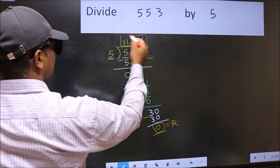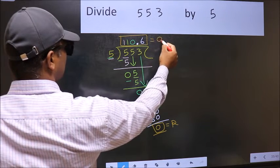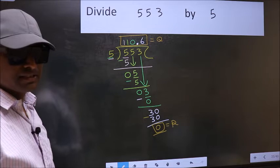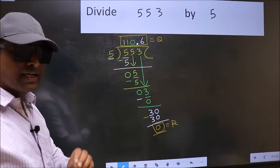And this is our quotient. Did you understand where the mistake happens? You should not do that mistake.